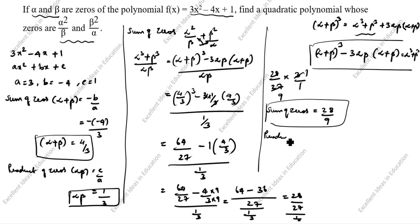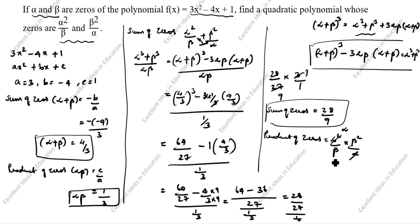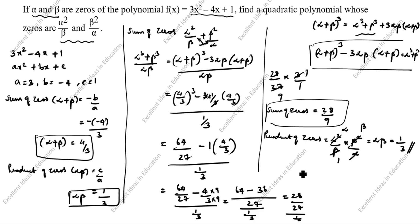Next, the product of zeros equals (alpha²/beta) × (beta²/alpha). Cancelling alpha and beta: one alpha cancels leaving alpha, one beta cancels leaving beta, giving alpha × beta. The product of zeros equals alpha·beta = 1/3.